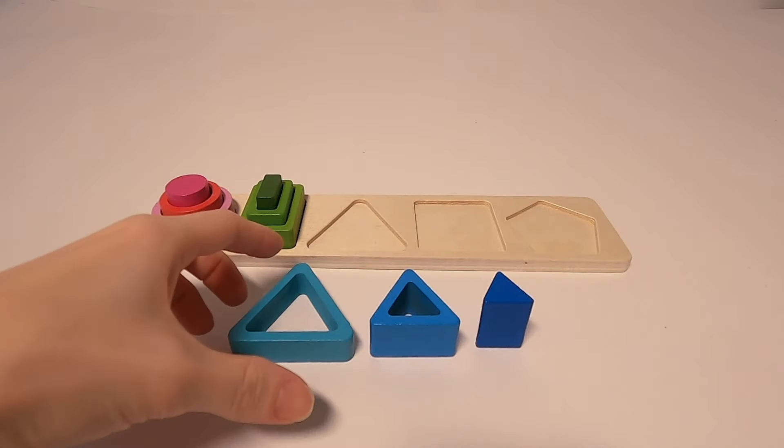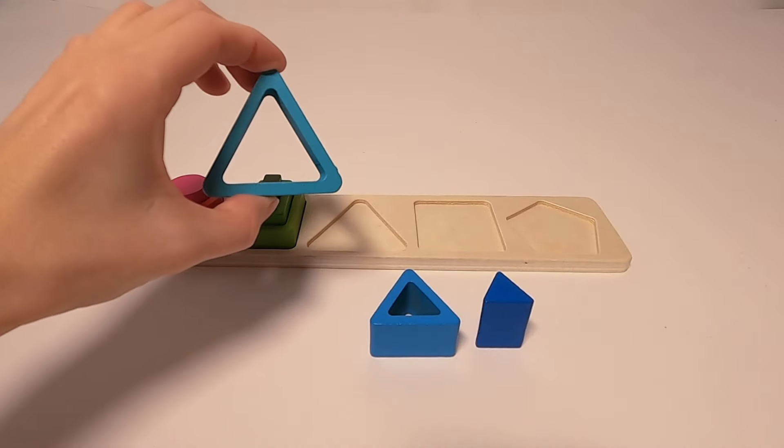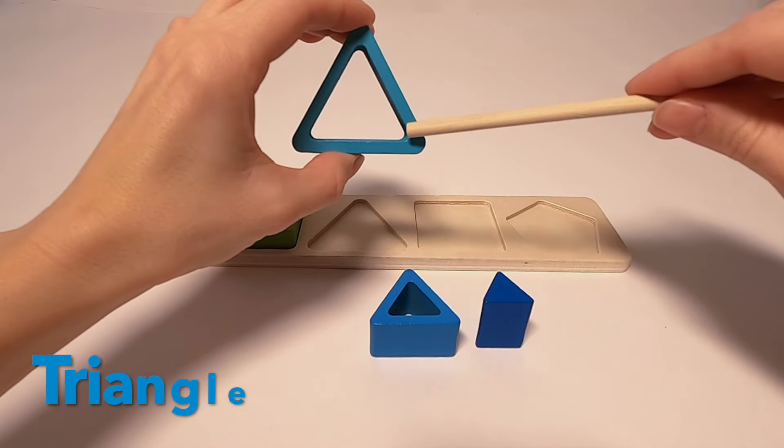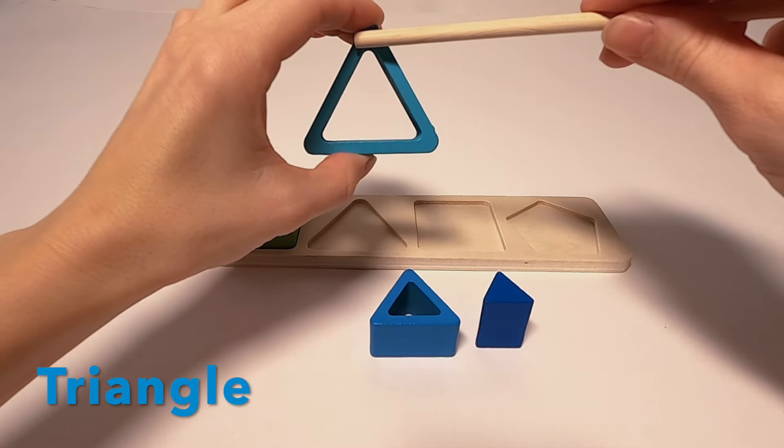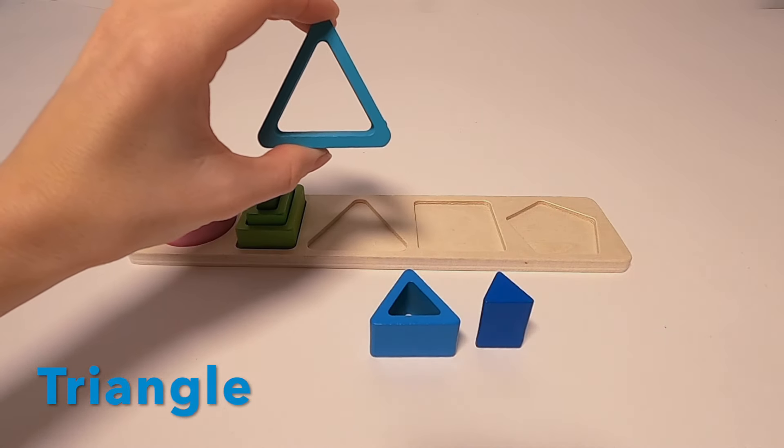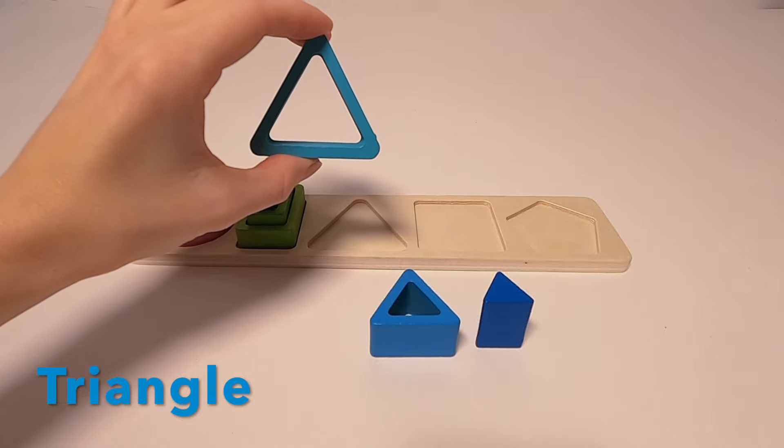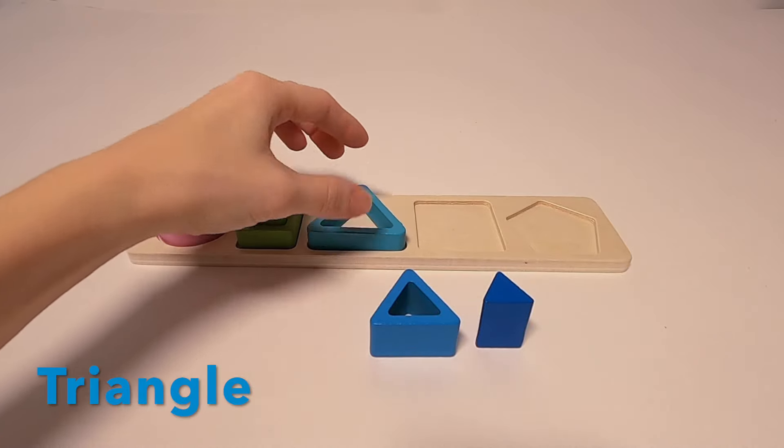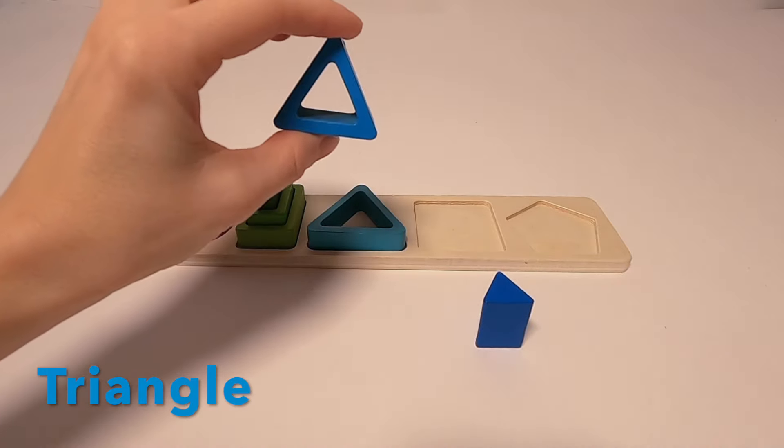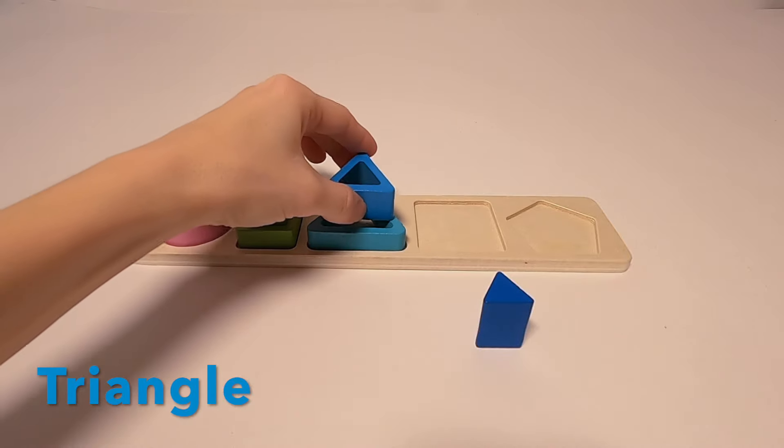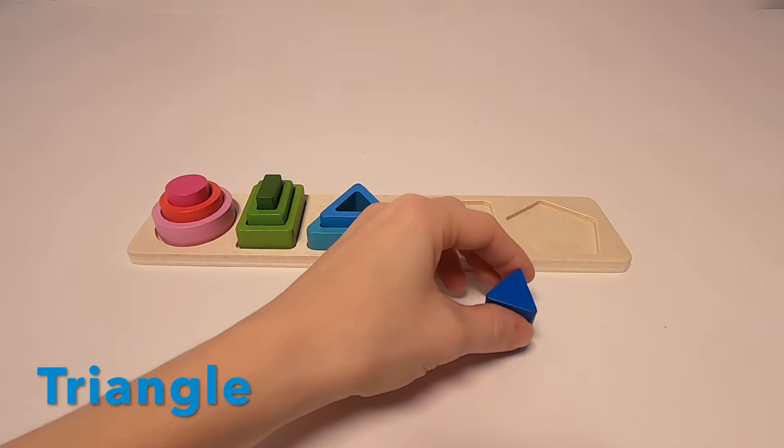The next shape is called a triangle. That looks kind of funny, right? If you turn it a little bit, it almost looks like an arrow. Here we have the three same sizes again: big, medium, and small.